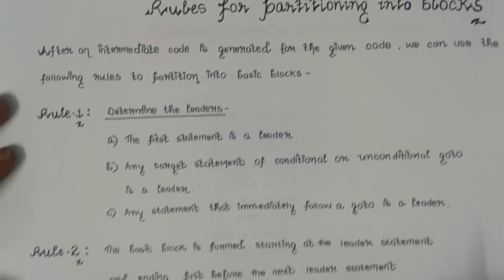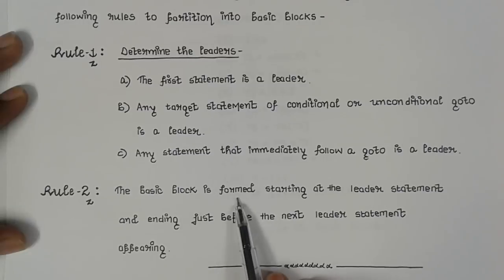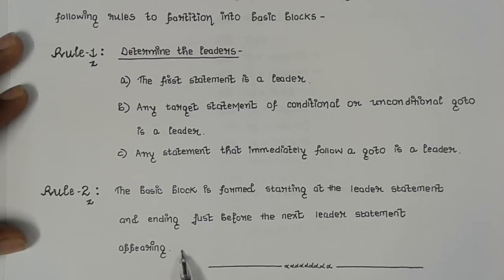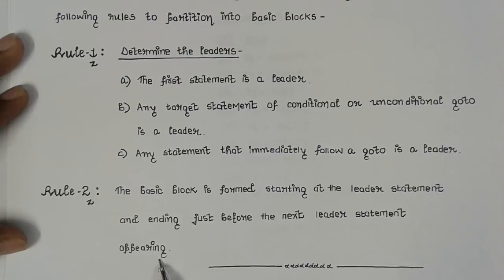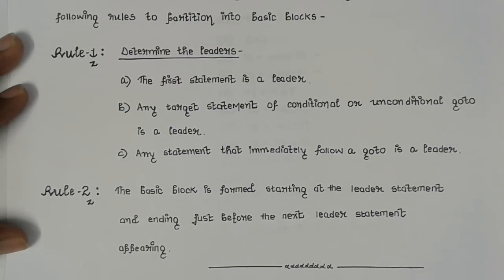Rule 2 says the basic block is formed starting at the leader's statement and ending just before the next leader's statement appears. So we start at the leader's statement and include all statements up to, but not including, the next leader's statement — grouping all those statements into one basic block.